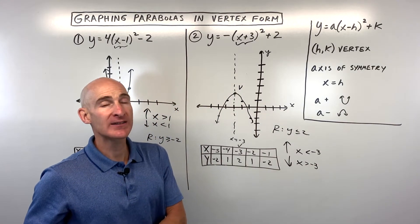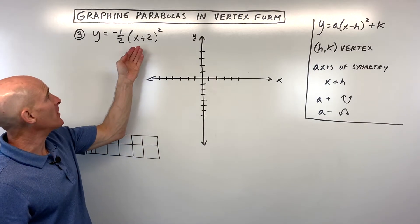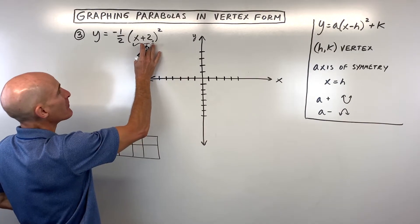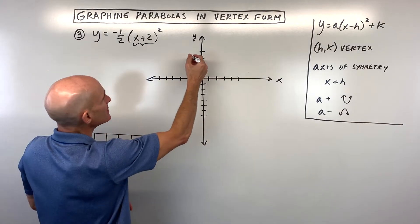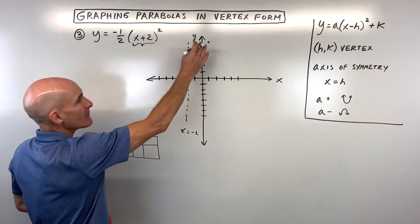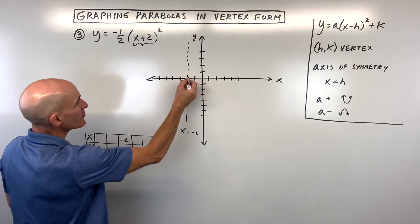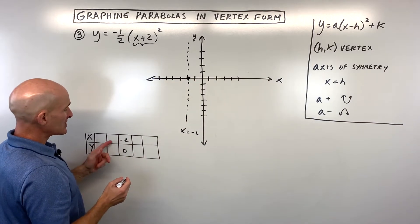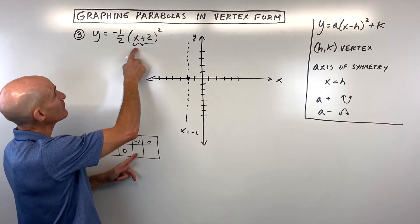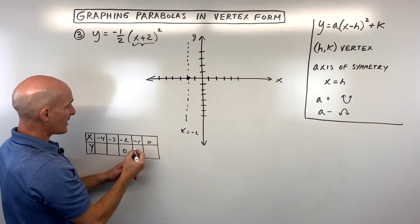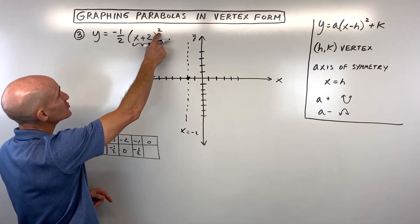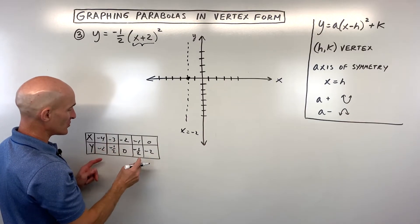Let's look at one last example. For example 3, where is the vertex? There is an h value but no k value. So the graph is being shifted not positive 2 but to the left — negative 2. That's the axis of symmetry: x equals negative 2, which is also the x-coordinate of our vertex. Because there's no k value, k equals 0, so our vertex is at negative 2, 0. Plugging in negative 1: negative 1 plus 2 is 1. 1 squared is 1. Times negative one-half is negative one-half. Plugging in 0: 0 plus 2 is 2. 2 squared is 4. Times negative one-half is negative 2.